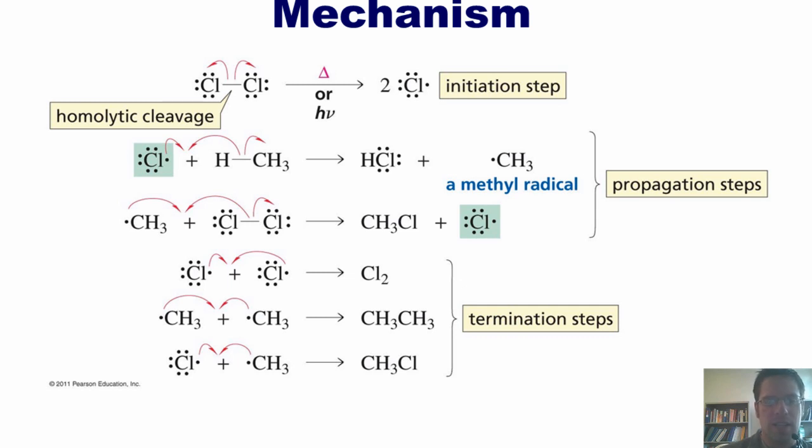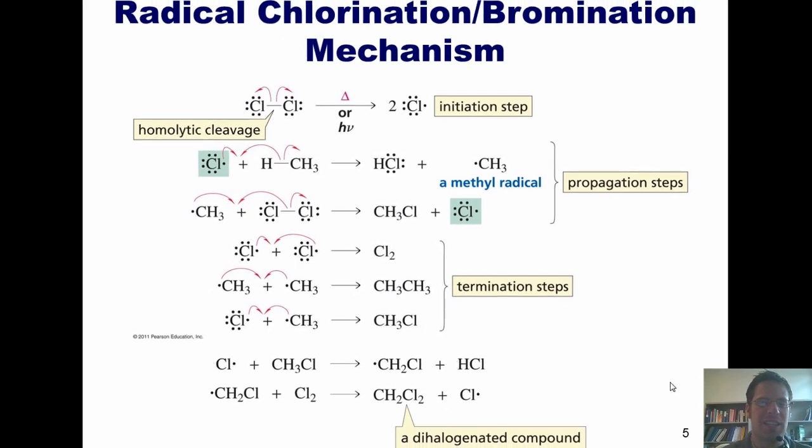Something else, interestingly, that can happen is I can have my chlorine radical get together with my methyl chlorine product and abstract one of its hydrogens to form HCl and a methyl chloride radical. That radical can then go on to combine with another molecule of chlorine to now form methyl dichloride that has two halogens on it. We'll pay some closer attention to this later on.